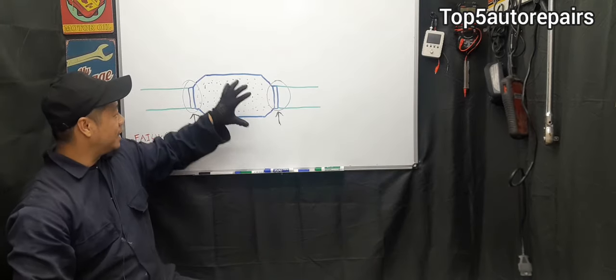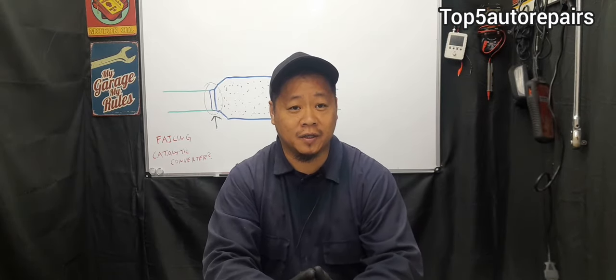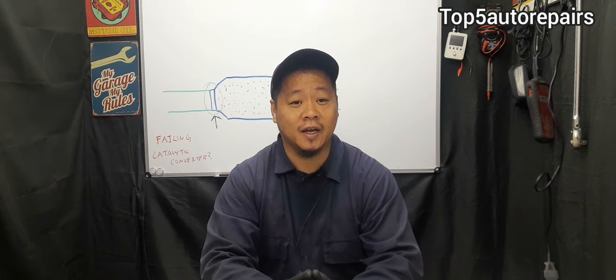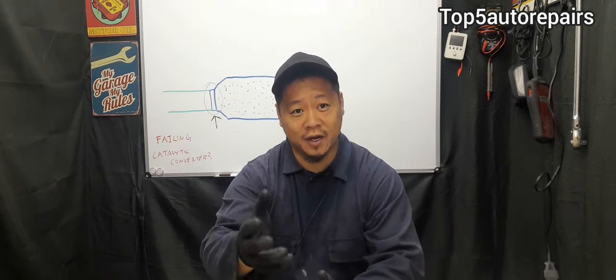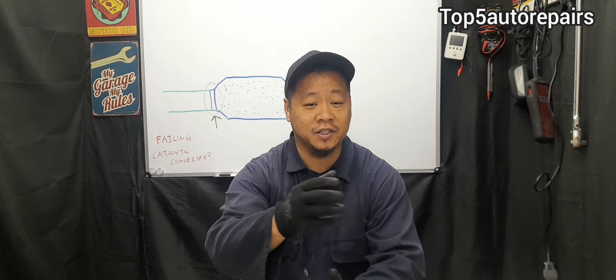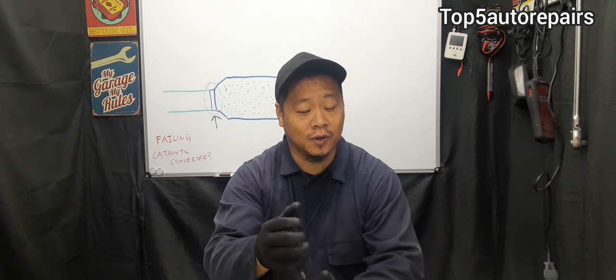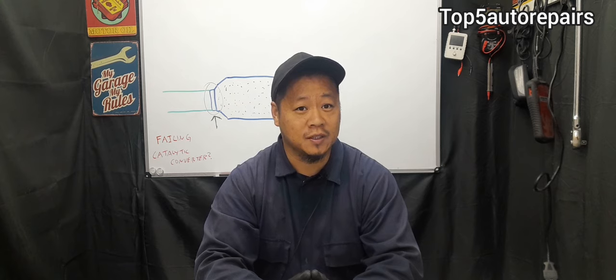The most accurate way to check if you got a bad catalytic converter or not is to conduct a back pressure test. To conduct a back pressure test, you have to remove the oxygen sensor and you're going to connect the back pressure test gauge onto it. Next thing you want to do is you want to compare it to manufacturer specification to see if it's within specs.